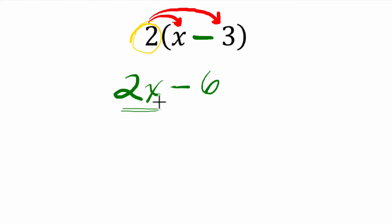2 times x is 2x, and 2 times 3 is 6, and we're subtracting, so it's 2x minus 6.